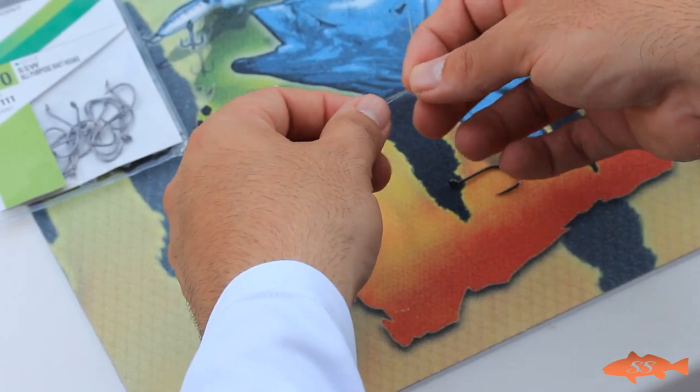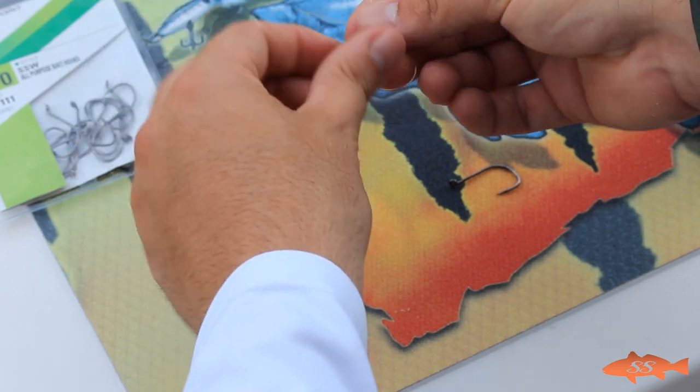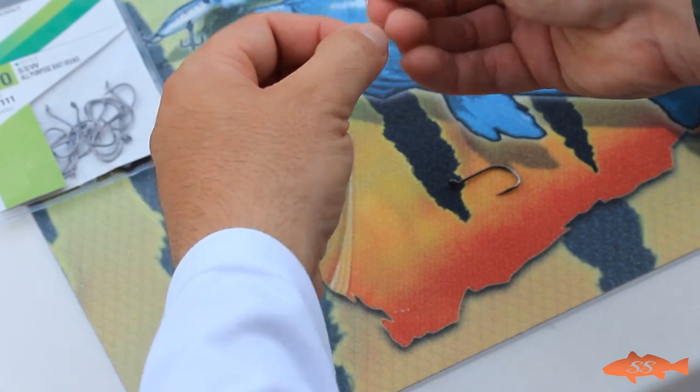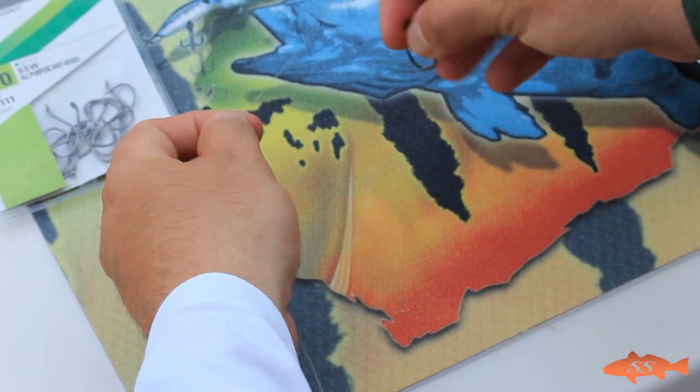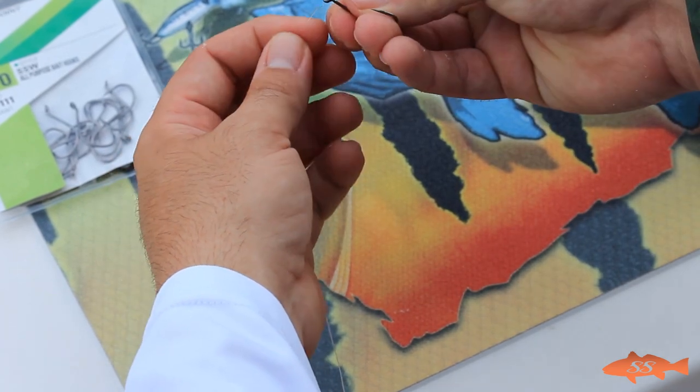Alright guys, so let me go ahead and show you how to make this loop knot. All you have to do is make a loop in the monofilament, just like so. And you take that tag line, or tag end, and you put it through the eye of your hook.